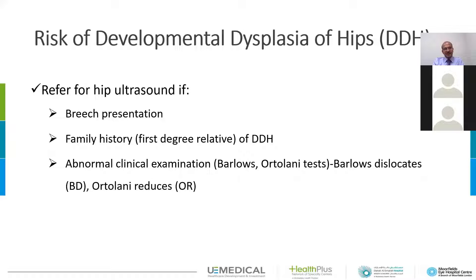We refer if there is a risk, like breech presentation — especially a female baby, who has a higher risk as well. Family history where a first-degree relative has developmental dysplasia of the hip is another risk factor. Abnormal clinical examination is of course an indication, including Barlow's and Ortolani tests — Barlow's dislocates and Ortolani reduces.